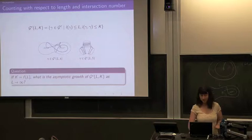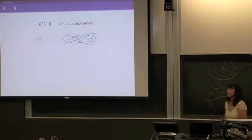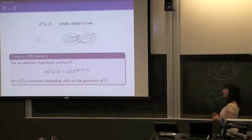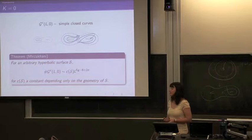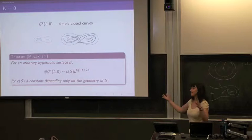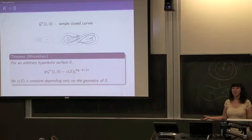For K equals zero, we're looking at the growth of the number of simple closed curves. There's the theorem of Mirzakhani that the growth of the number of simple closed curves on a hyperbolic surface S grows polynomially in L, where the exponent is 6g − 6 + 2n. This is also related to the dimension of the space of measured laminations.